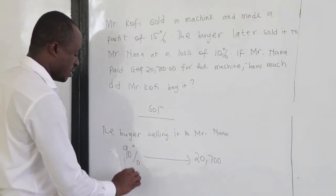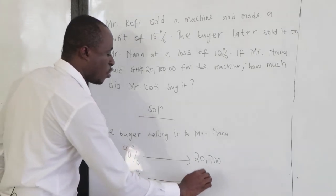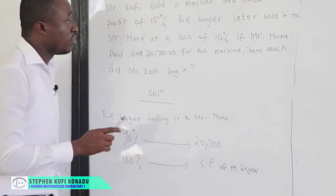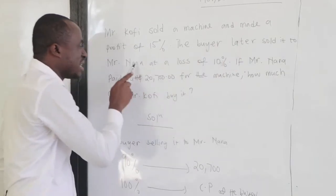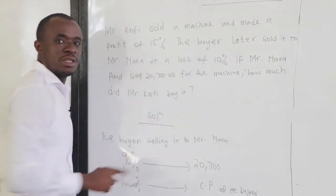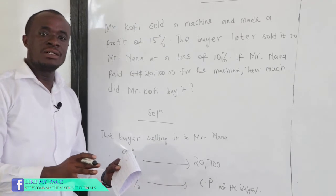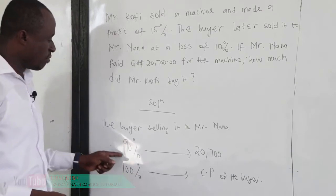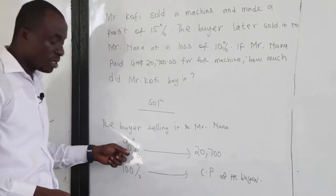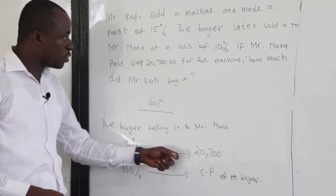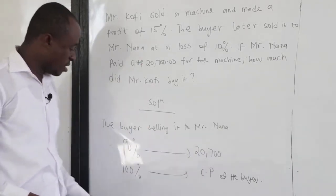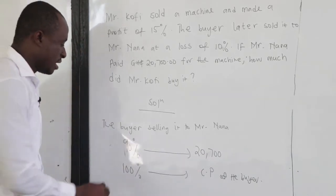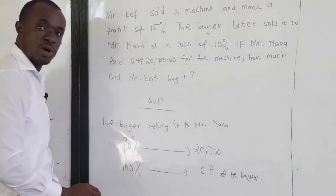Now 100% will be the cost price of the buyer. We've been told the buyer later sold it to Mr. Nana at a loss of 10%, so the amount that the buyer bought it — that is his cost price — we have to reduce it by 10%. So 100 minus 10 is 90%, which corresponds to the amount 20,700. Now 100% will be the cost price of the buyer.